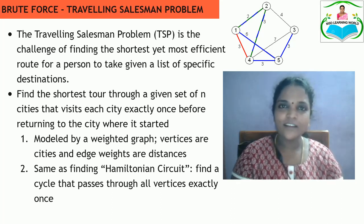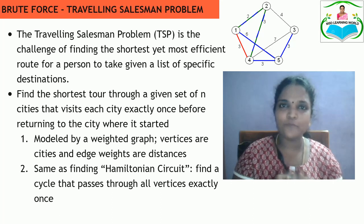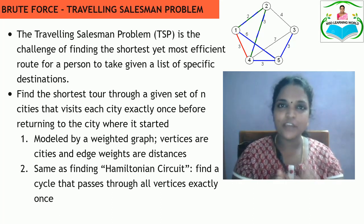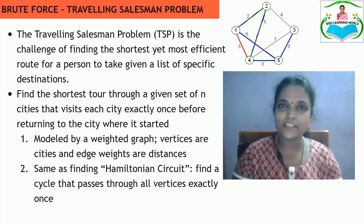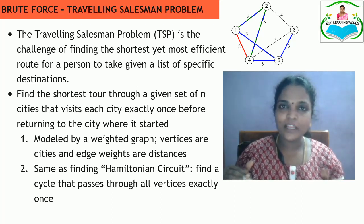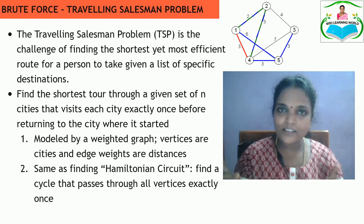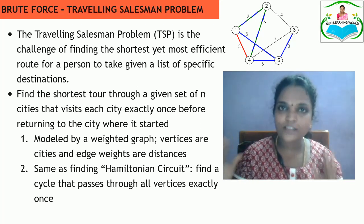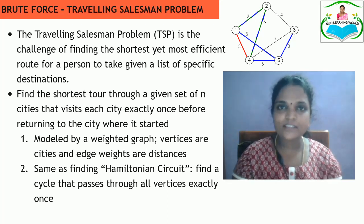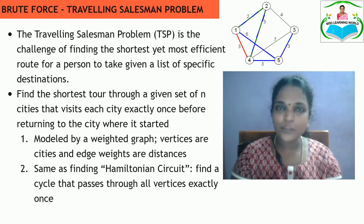This problem is a great challenging problem where, with a given n number of cities, one city is a source and another is a destination. The aim is to find the shortest path from source to destination. Here we use a graph data structure where vertices represent cities and edges represent the distance between two cities.